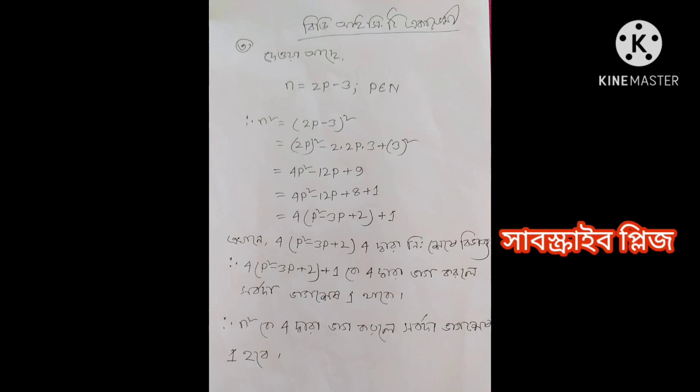So this gives us 4p squared minus 2p plus 9. Then 4p squared minus 2p plus 9 — we have to call it that.